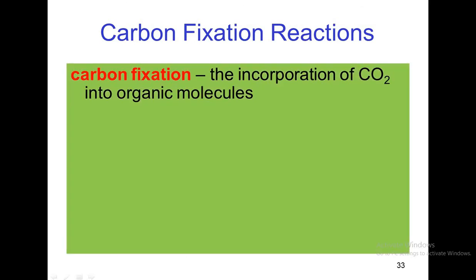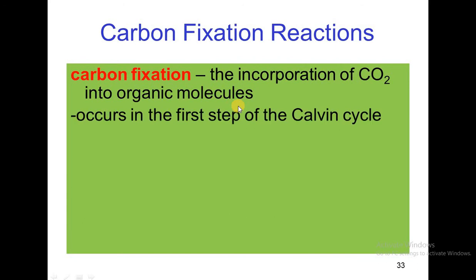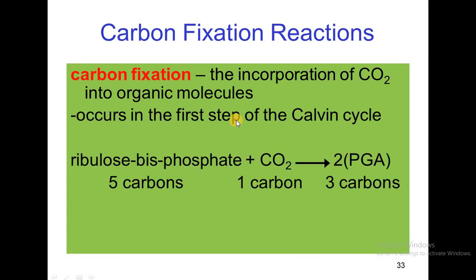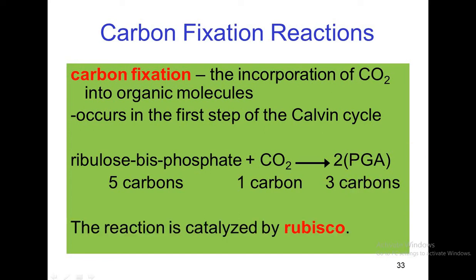Carbon fixation is the incorporation of carbon dioxide into organic molecules. This is the first step of the Calvin cycle. Ribulose bisphosphate, a 5-carbon compound, reacts with carbon dioxide, a 1-carbon molecule, and produces 2 molecules of phosphoglycerate, a 3-carbon compound. This reaction is catalyzed by rubisco.